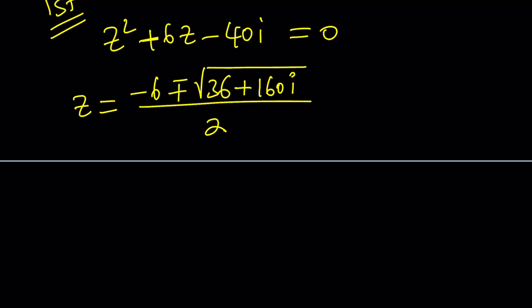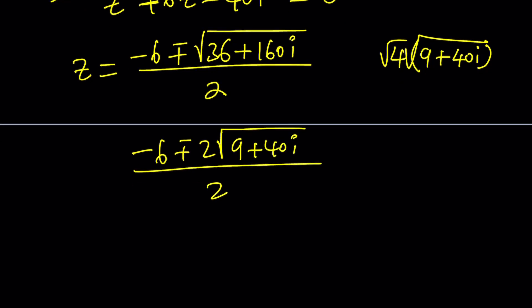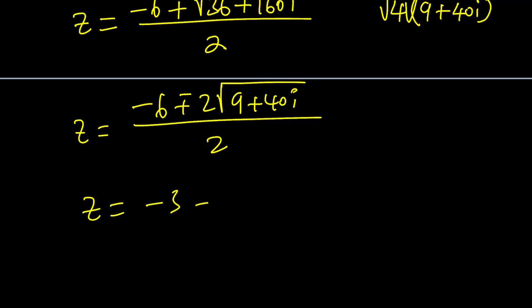I can take out a 9, can't I? Well, actually not 9. I meant 6. Wait a minute. Is 6 a common factor? 36 and 160. I need to find a perfect square. I think in this case, 9 probably wouldn't work, but 4 would work. So if I can take out a 4, that would be nice. And that actually gives me 4 times 9 plus 40i. So we'll have a 2 here times the square root of 9 plus 40i. And if you divide everything by 2, z will be negative 3 plus minus the square root of 9 plus 40i.